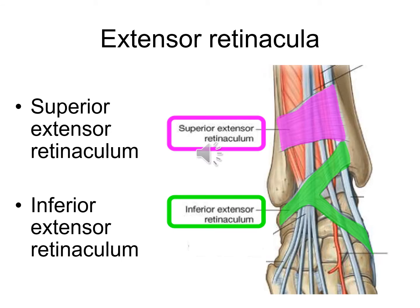Extensor retinacula are of two types: superior extensor retinaculum and inferior extensor retinaculum. These retinacula are present on the front of the ankle. The tendons of the extensor compartment of leg pass deep to these retinacula and reach the dorsum of foot. Their main function is to keep the tendons in position and prevent springing out of the extensor tendons during their contraction.